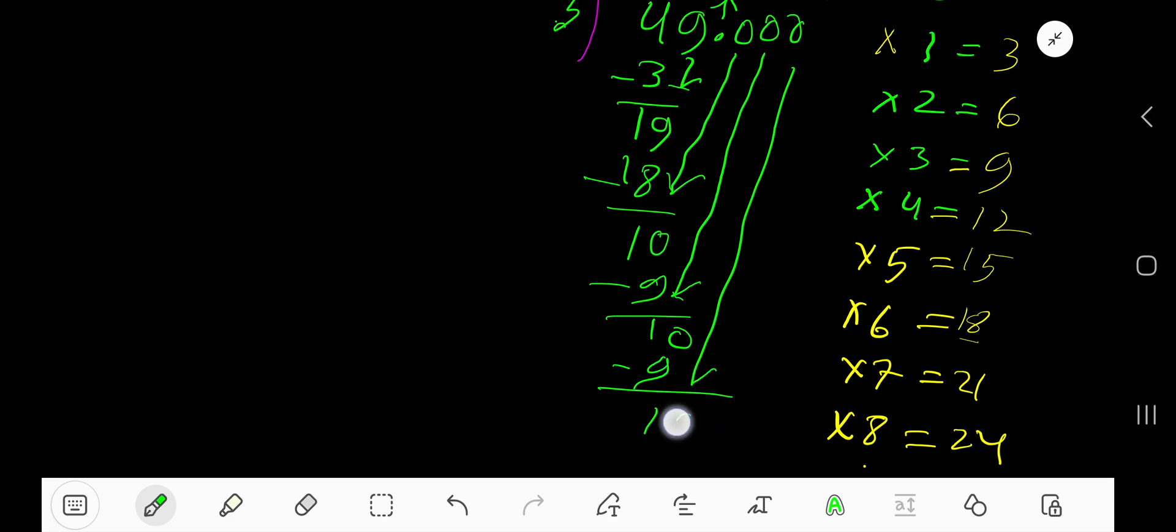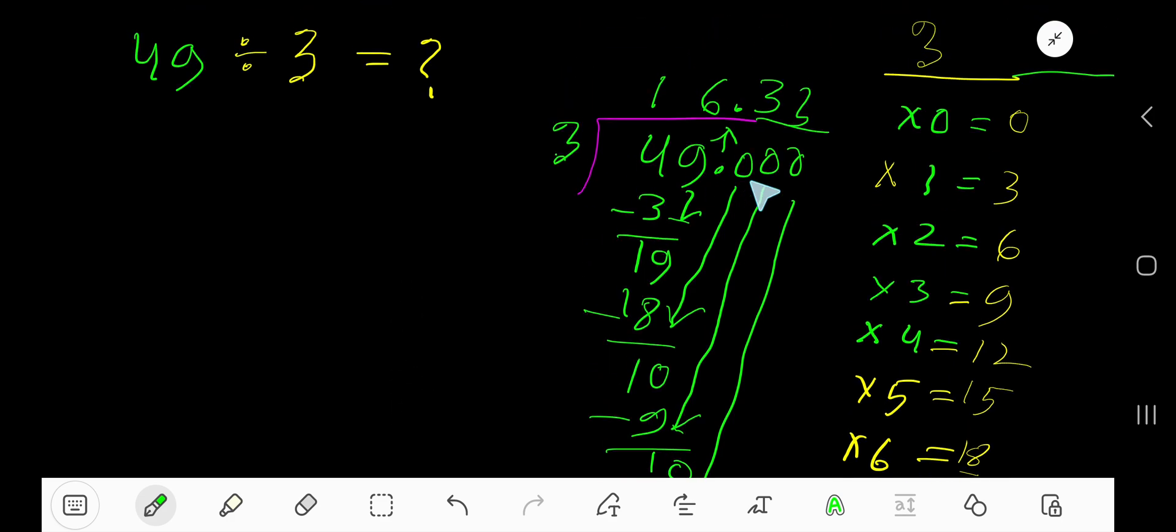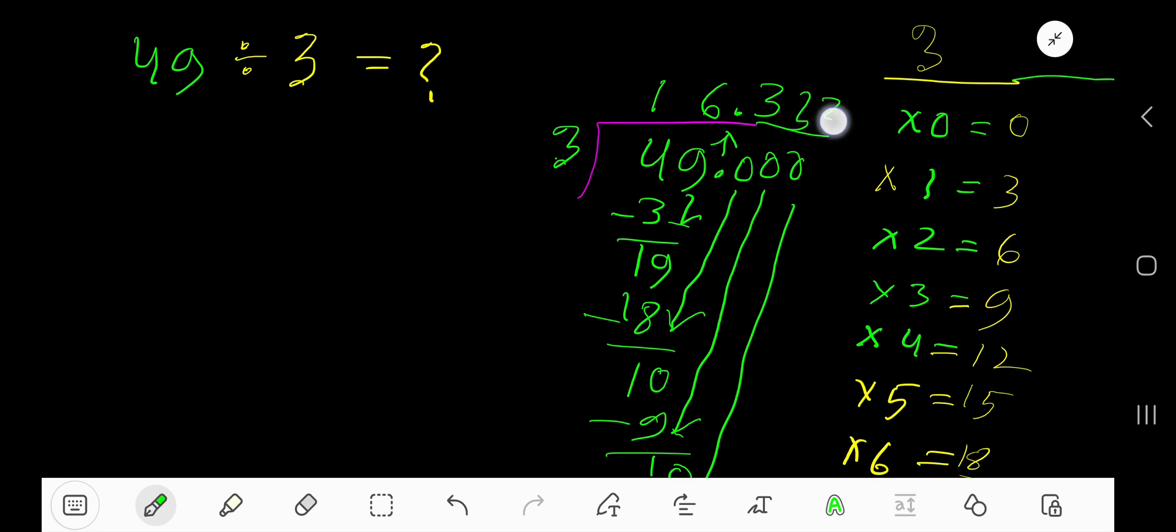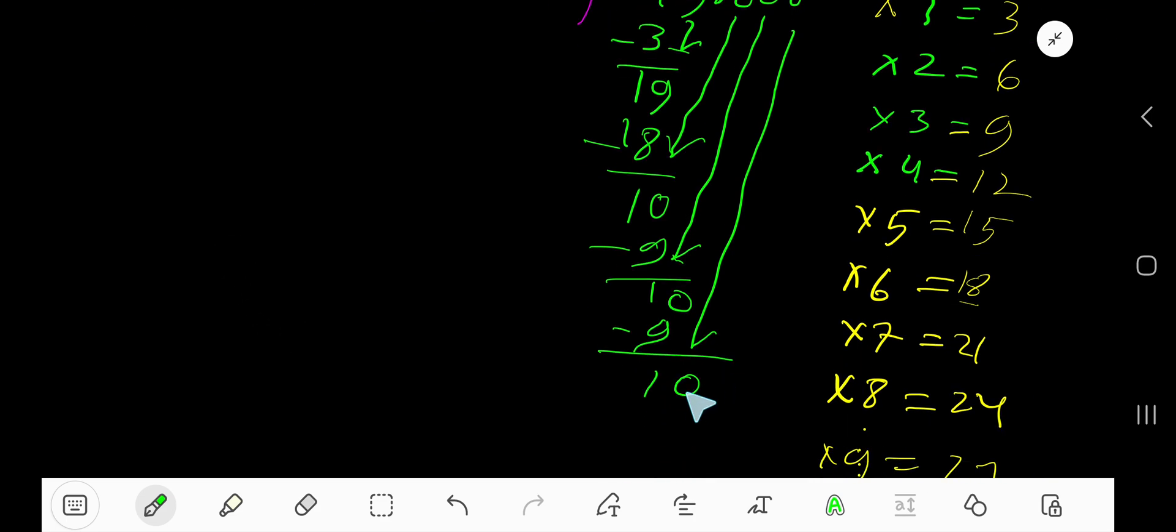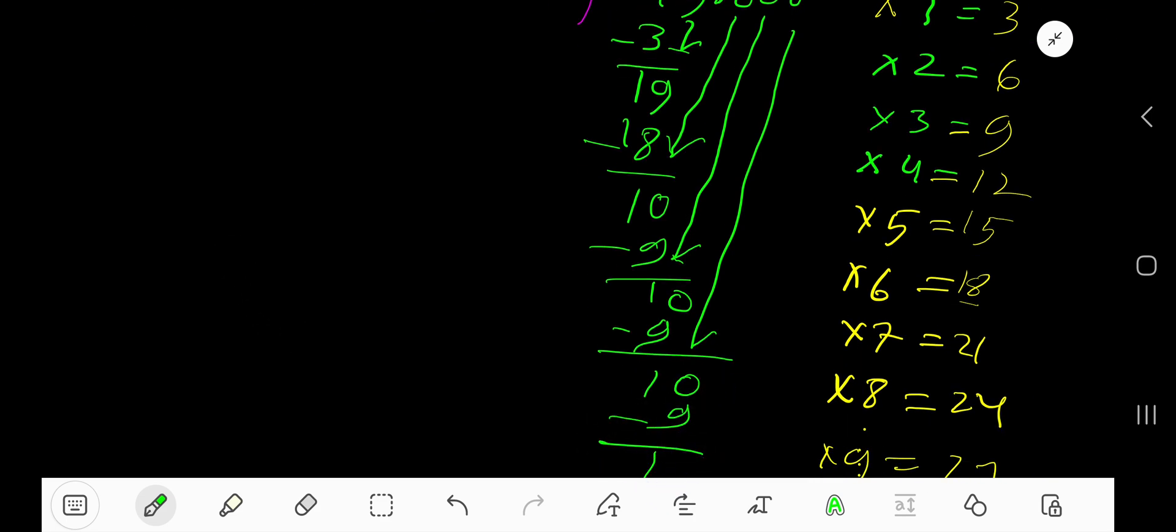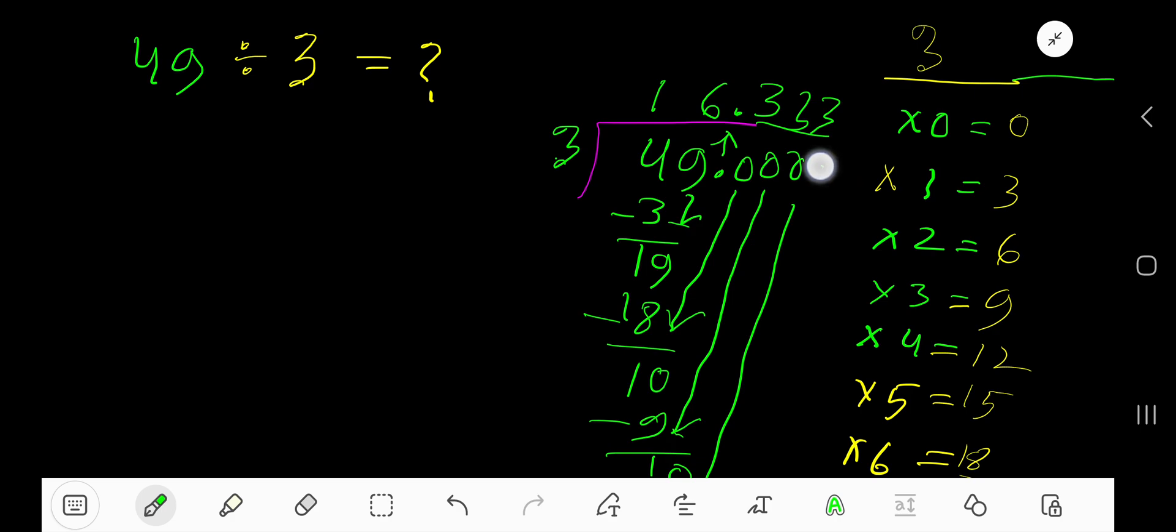Bring down this 0. 3 goes into this 10 again, 3 times, 3 times 3, 9. Subtract 1. That is, you can continue this process.